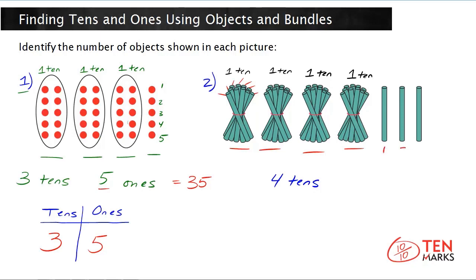There are one, two, three rods left over, and that means that you actually have three ones. And if you want to know what number this is, you can use a place value chart again.